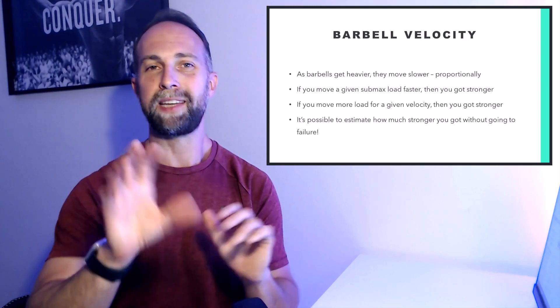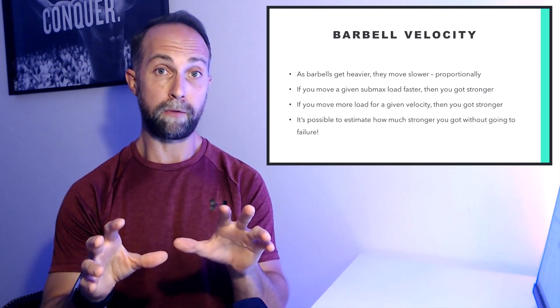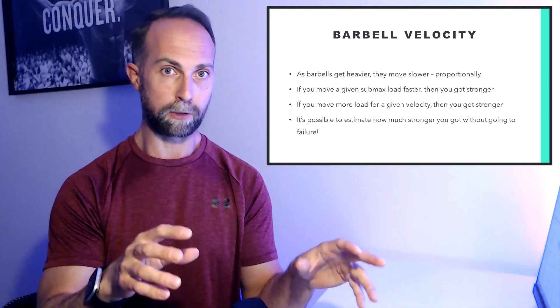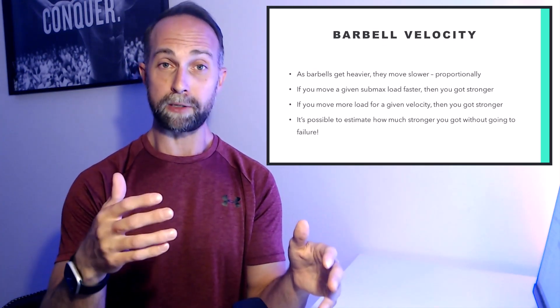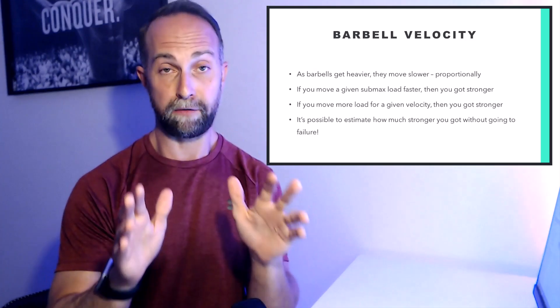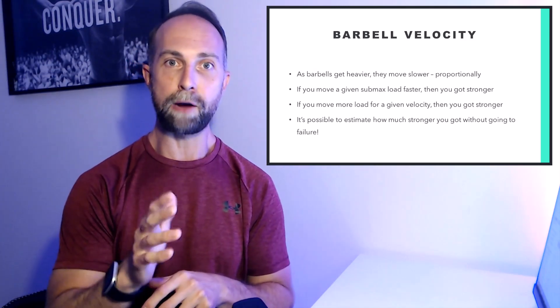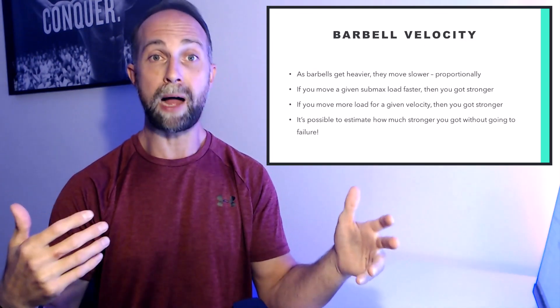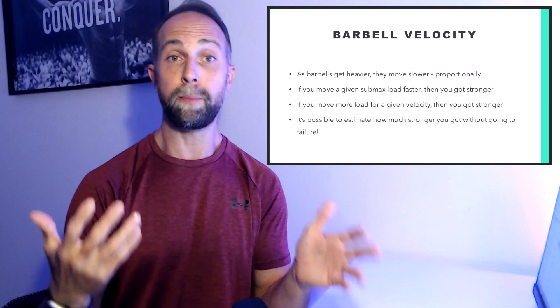There's another way that you can assess your maximal strength level without having to go to failure at all, and that's by looking at barbell velocity. You can easily measure barbell velocity using some apps on your smartphones. Just go to the app store and search in strength training velocity, and you'll see a bunch of apps that enable you to measure your barbell velocity. The reason this works is pretty straightforward. As barbells get heavier, the velocity of the concentric portion of the movement goes down in a linear fashion.